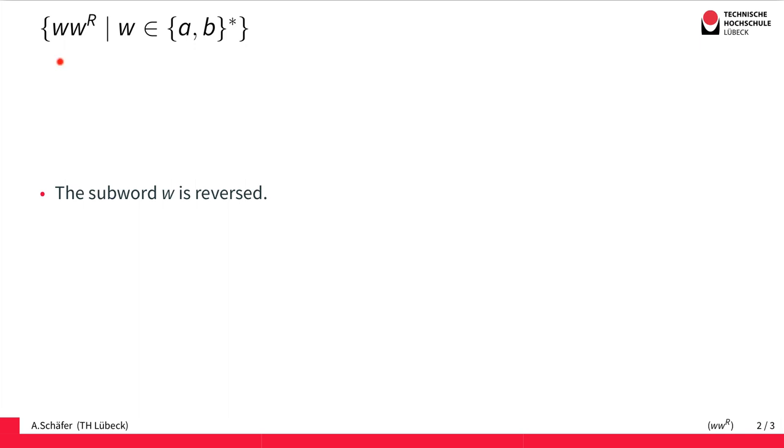So the palindromes are formed by taking some arbitrary word, reversing it, and concatenating both. The idea is that the subword W from the beginning is reversed and added to this subword.